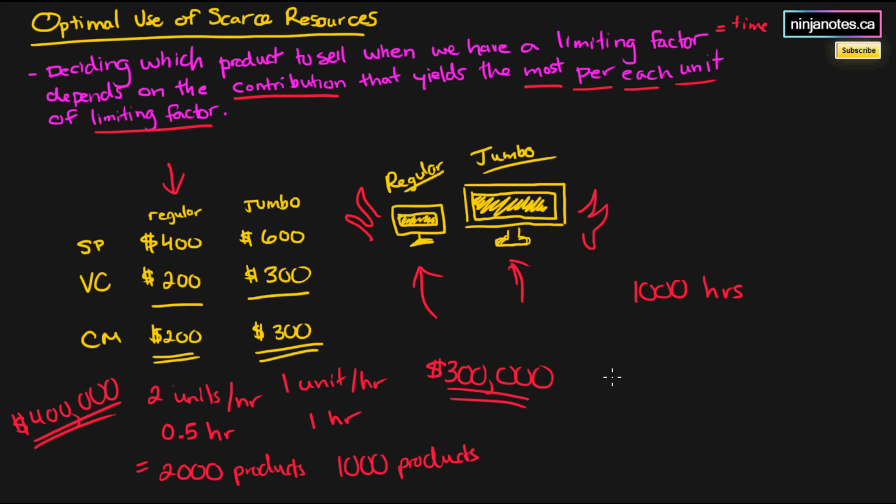If we were to have just 1 hour, we can have $400 of contribution margin in the case of the regular product line. If we're selling 2 units an hour, and we're getting $200 of contribution margin for every product, that means we'll have $400 of contribution margin an hour.